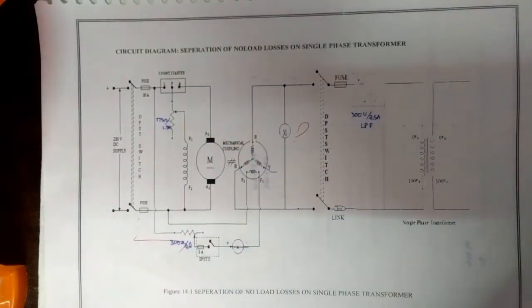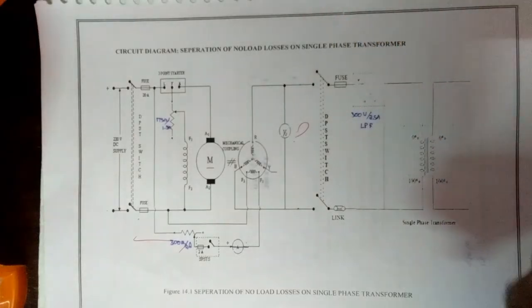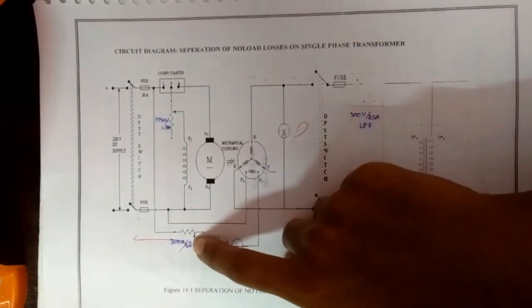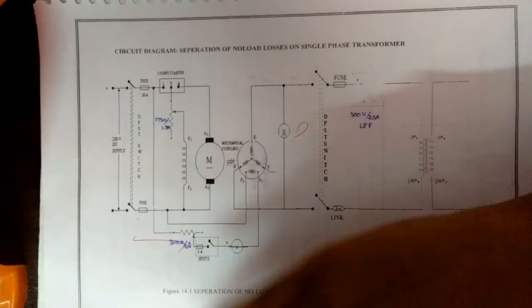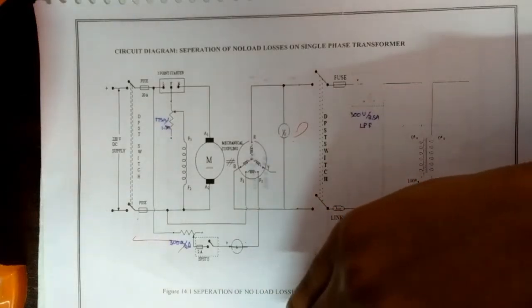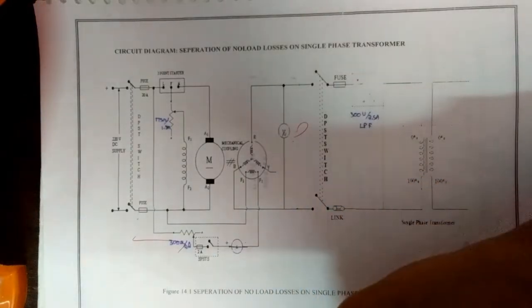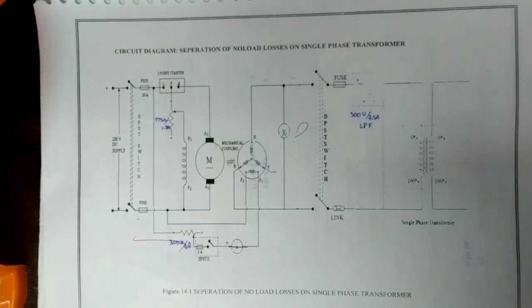By varying the alternator field rheostat gradually, the rated primary voltage is applied to the transformer.